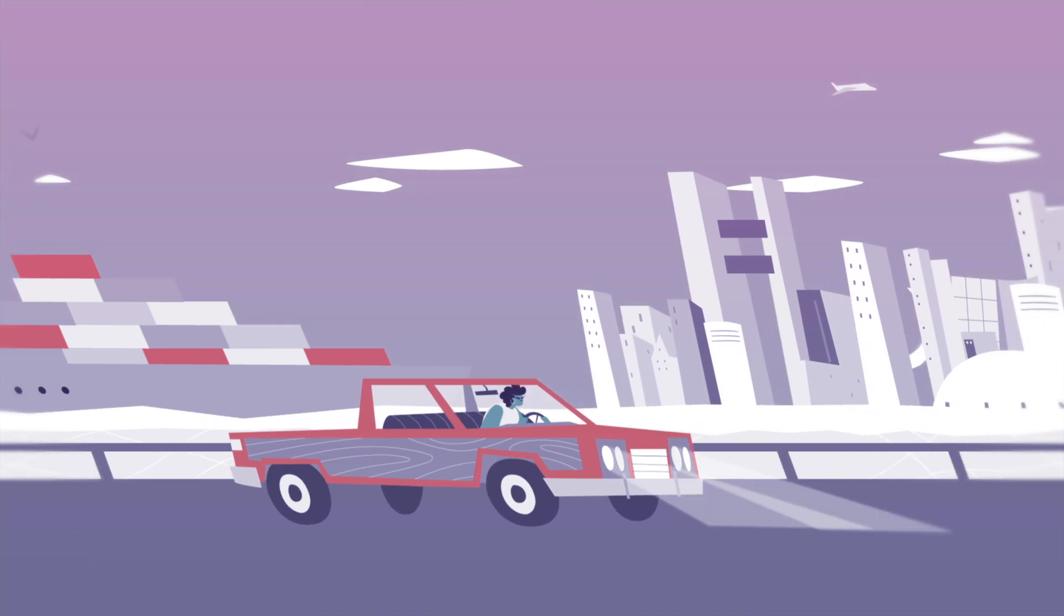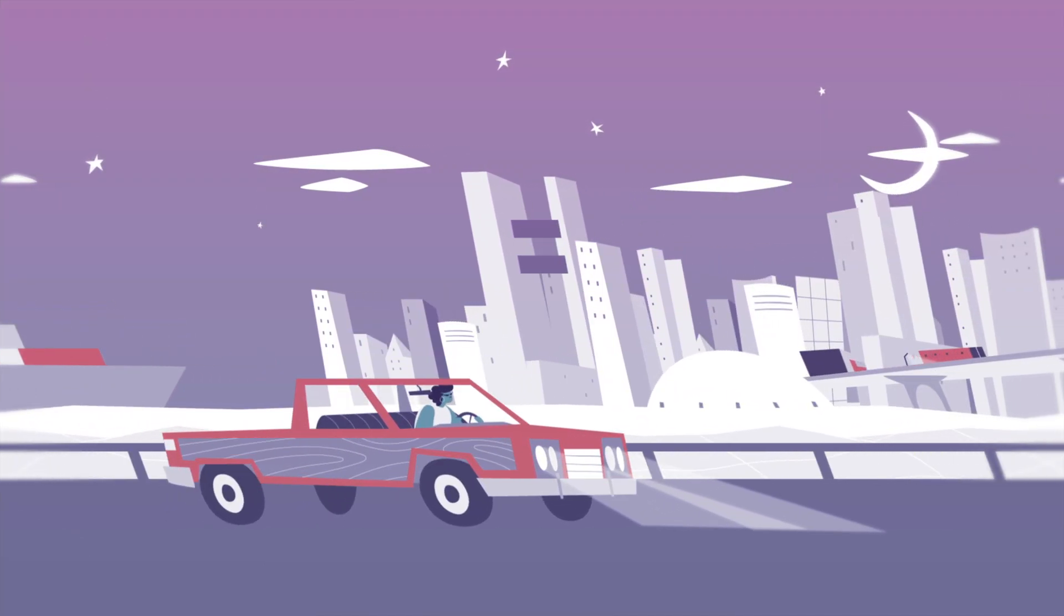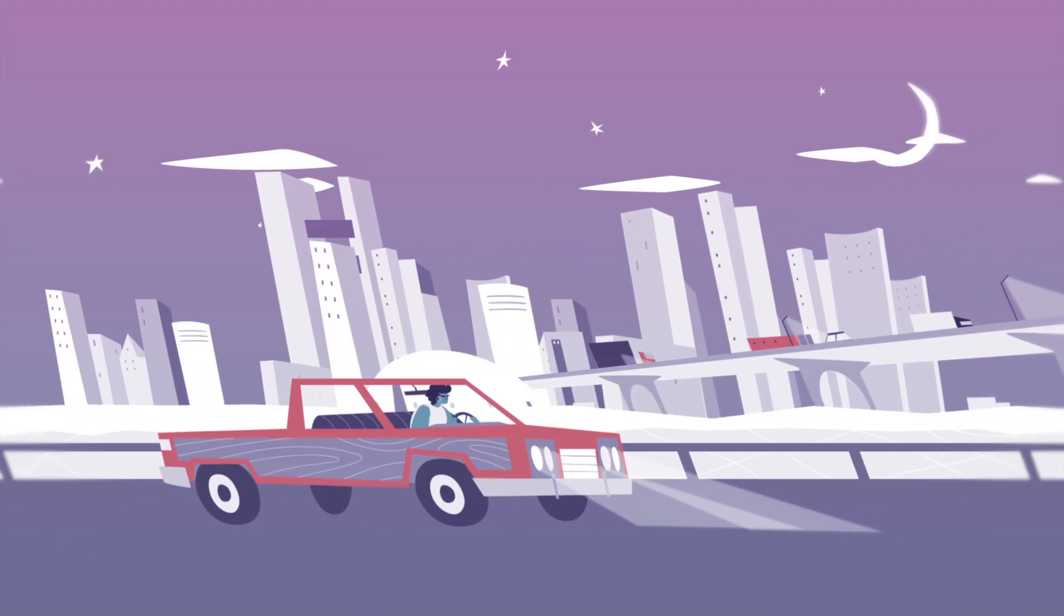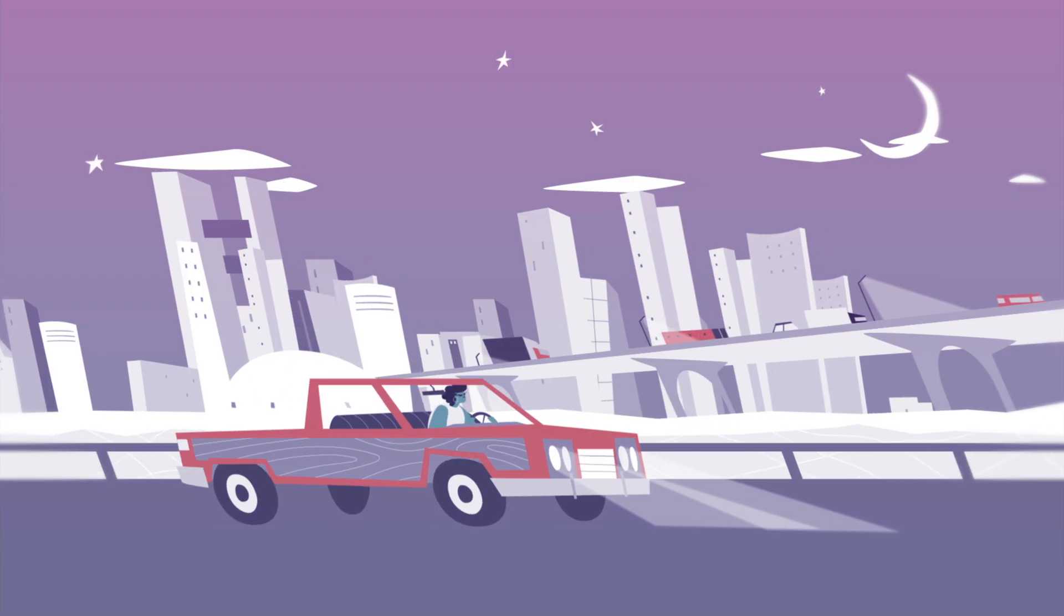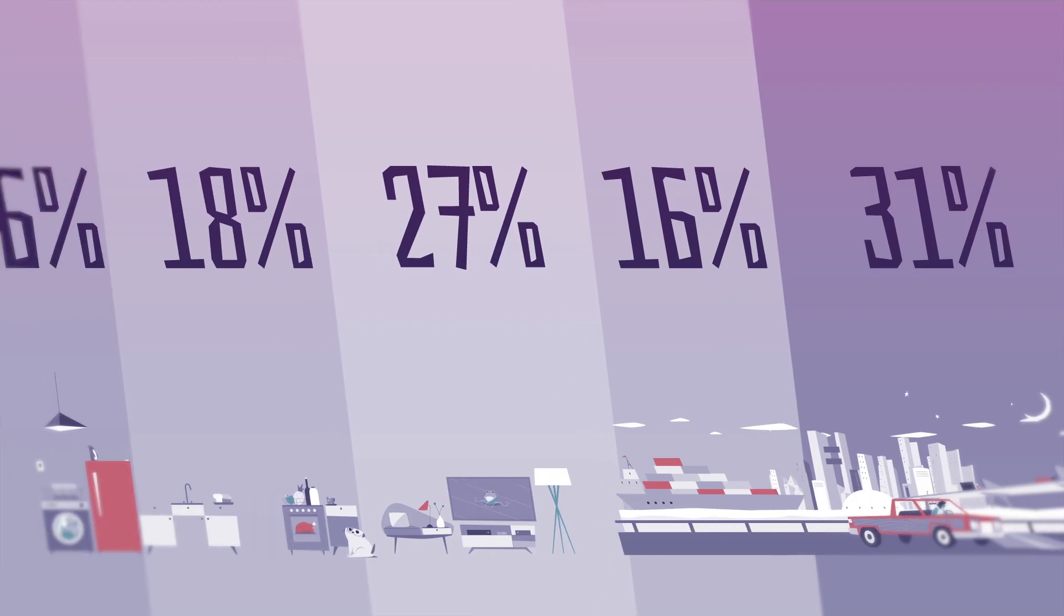Even before we use any of these things, making them produces emissions. A lot of emissions. Making materials—concrete, steel, plastic, glass, aluminum, and everything else—accounts for 31% of greenhouse gas emissions.